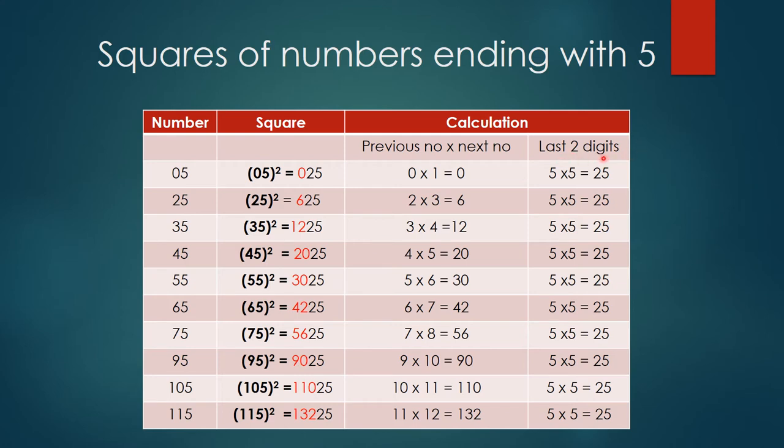Last two digits means last two digits of a square. Now 5 can be written as 05. All right, now 0 and the next number to it is 1, so 0 times 1 is 0, so that is 0 only. Now the last two digits of this square will be, this 5 has to be squared.